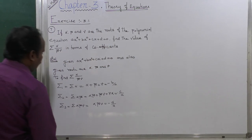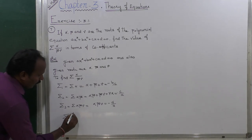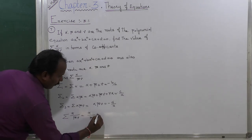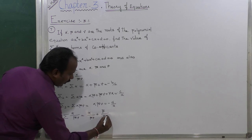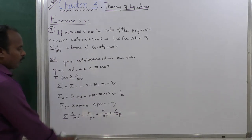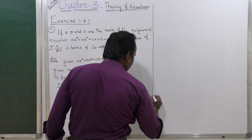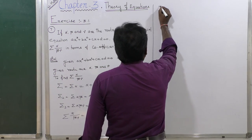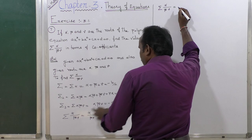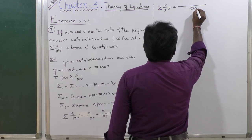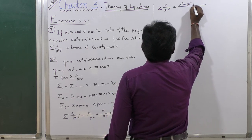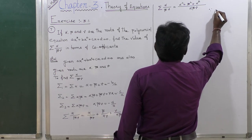Next, find the value of summation of alpha divided by beta·gamma. The expansion is: summation of alpha divided by beta·gamma = alpha/(beta·gamma) + beta/(alpha·gamma) + gamma/(alpha·beta). Taking LCM, the denominator becomes alpha·beta·gamma.